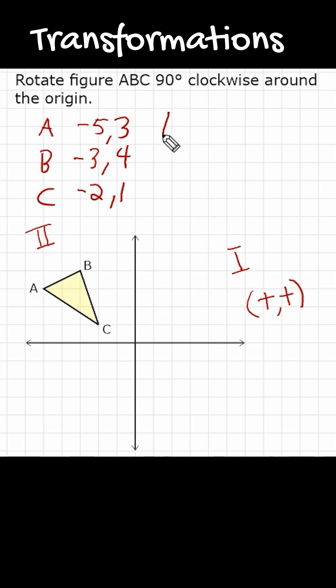So to rotate 90 degrees in either direction, clockwise or counterclockwise, all you have to do is take your X and your Y values of each point and switch them around. So we're going to take 5 and 3 and write 3 and 5. We're going to take 3 and 4 and switch those. It's going to be 4 and 3. And then we're going to take negative 2 and 1 and switch it to be 1 and 2.